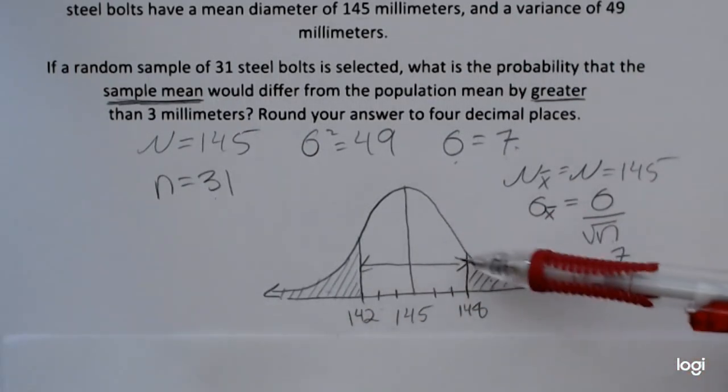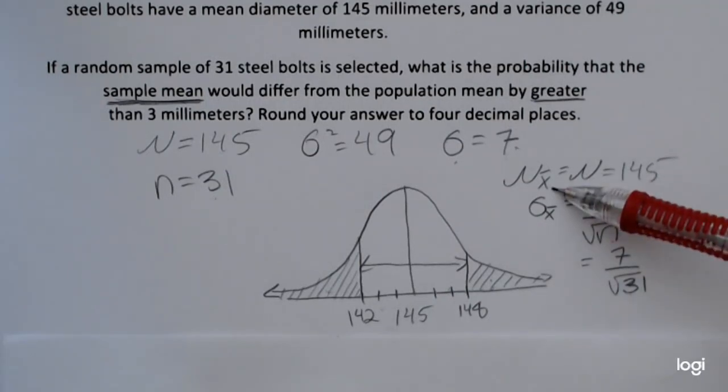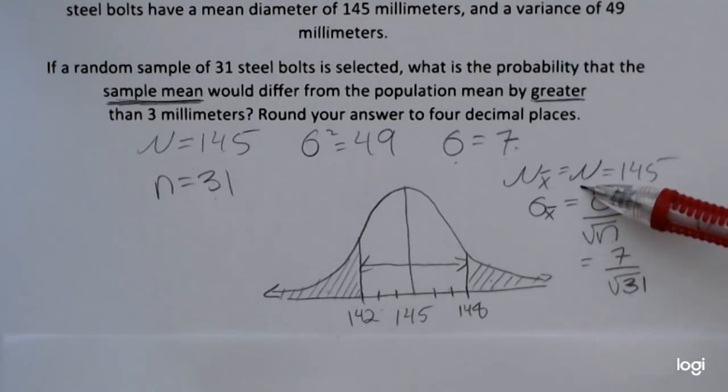I went ahead and sketched a bell-shaped distribution, and under the Central Limit Theorem, the mean of the sample means is the same as the original population or parent population mean, which was given to be 145, but the standard deviation is not the same.